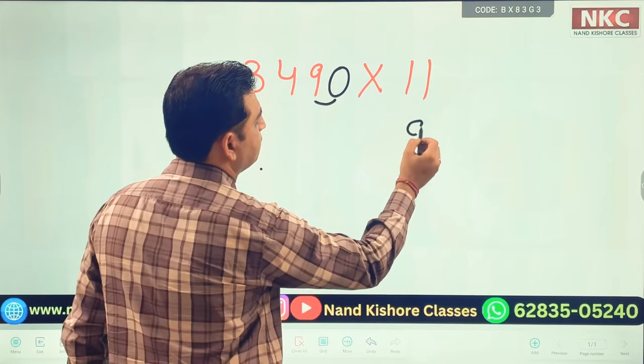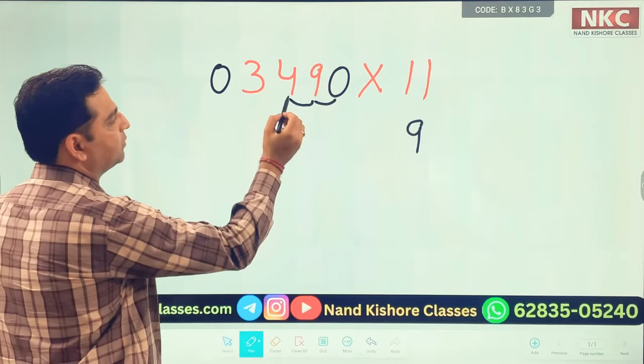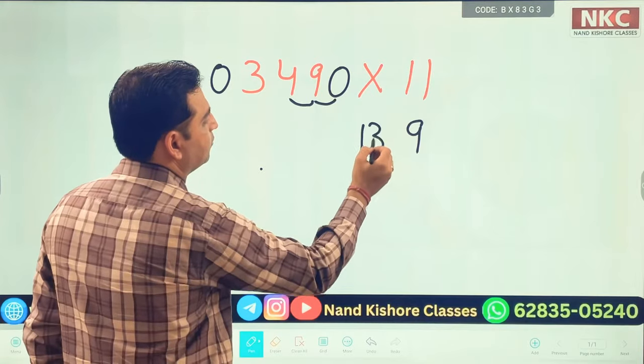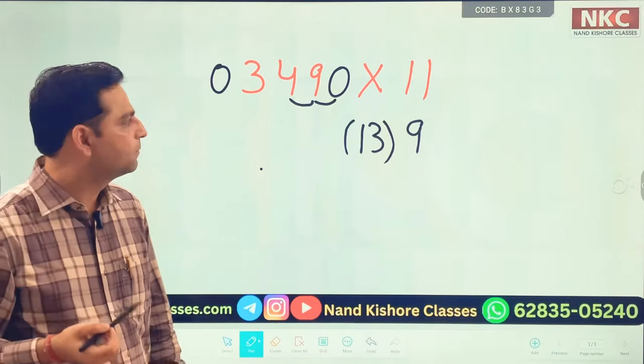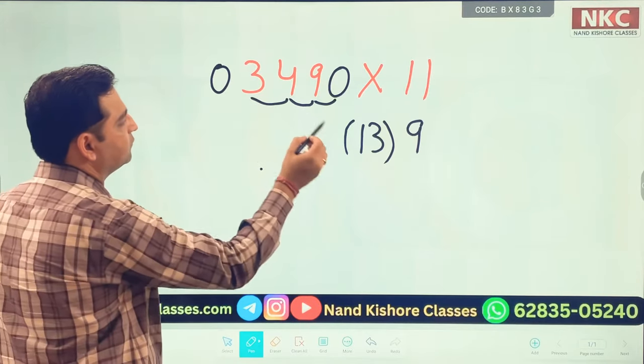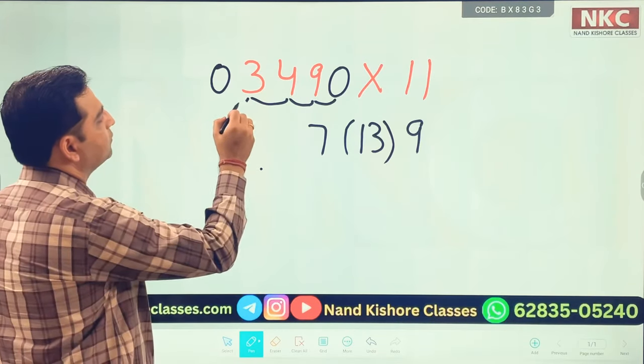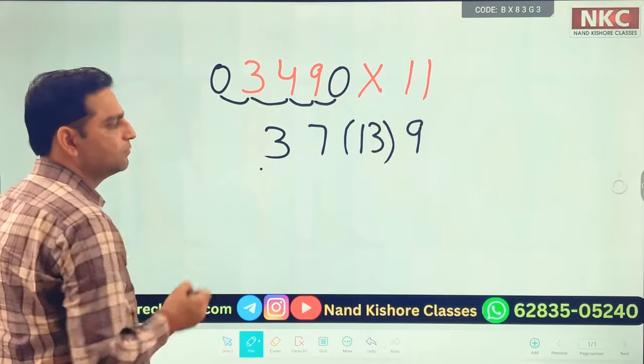0 plus 9 is 9. 9 plus 4 is 13. But do remember if it is a 2 digit number I am going to write it in the bracket. 4 plus 3 is 7. 3 plus 0 is 3. This is what we get.